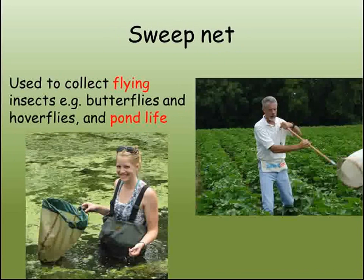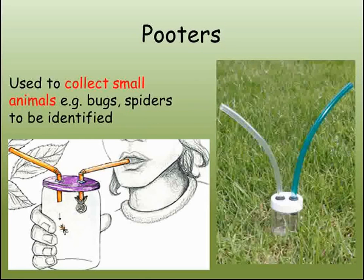Flying insects, such as hoverflies or butterflies, will obviously not fall into pitfall traps. These can be sampled and collected using a sweep net. The same equipment can be used in a pond, river or lake to sample the small animals living in the water. Finally, pooters can be used to collect up small animals to be identified later.